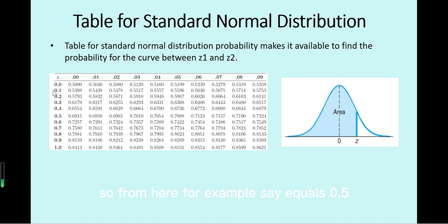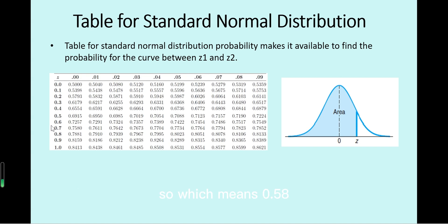From the normal table, for example, if z equals 0.58, we look at the row for 0.5 and column 8, giving 0.58, and the table value is 0.7190.